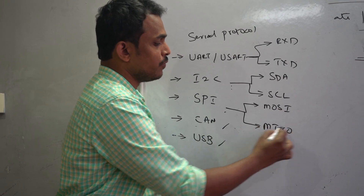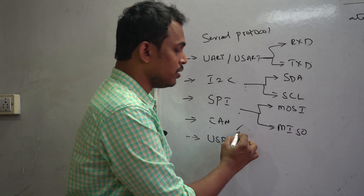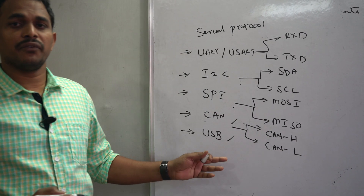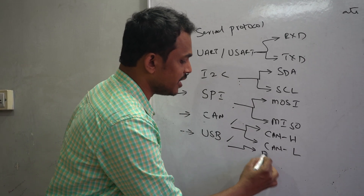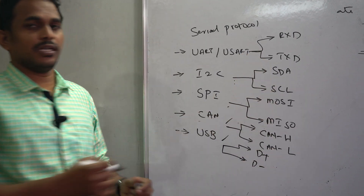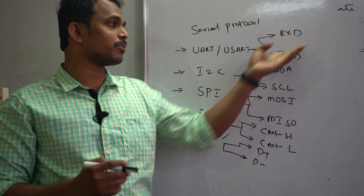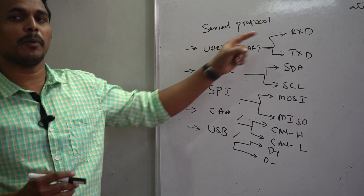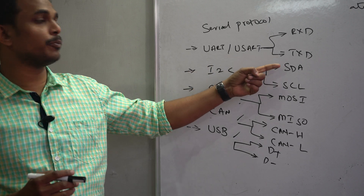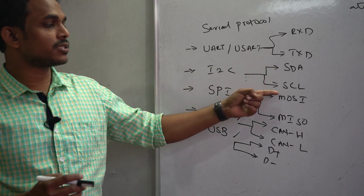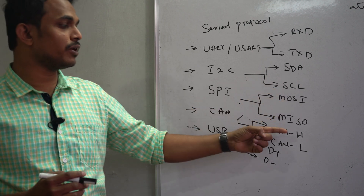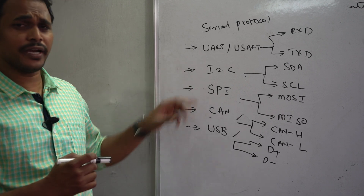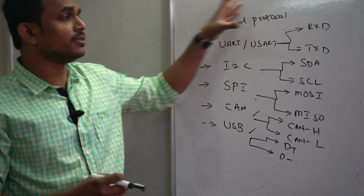MOSI and MISO stand for Master Out Slave In and Master In Slave Out. For CAN protocol, you will find the lines CAN-H and CAN-L. If the device supports USB communication, you will find the physical lines D+ and D−. So if these physical lines are present in the pin diagram of a microcontroller, you can tell that the device supports the related protocol. This is the best way to physically identify which protocol a device supports.